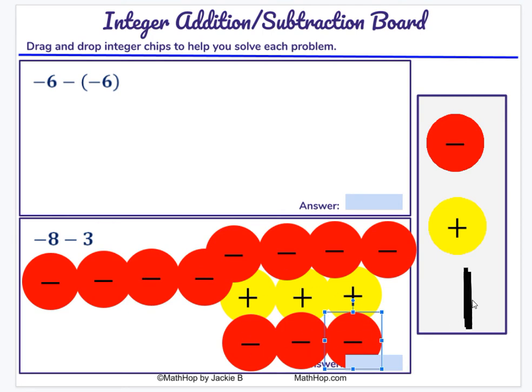But now I need to, and why I had to do that is because I need to cross out three positive chips. So I'm going to take a stick. I'm going to cross out one positive chip. I'm going to cross out another positive chip. And I'm going to cross out the third positive chip.